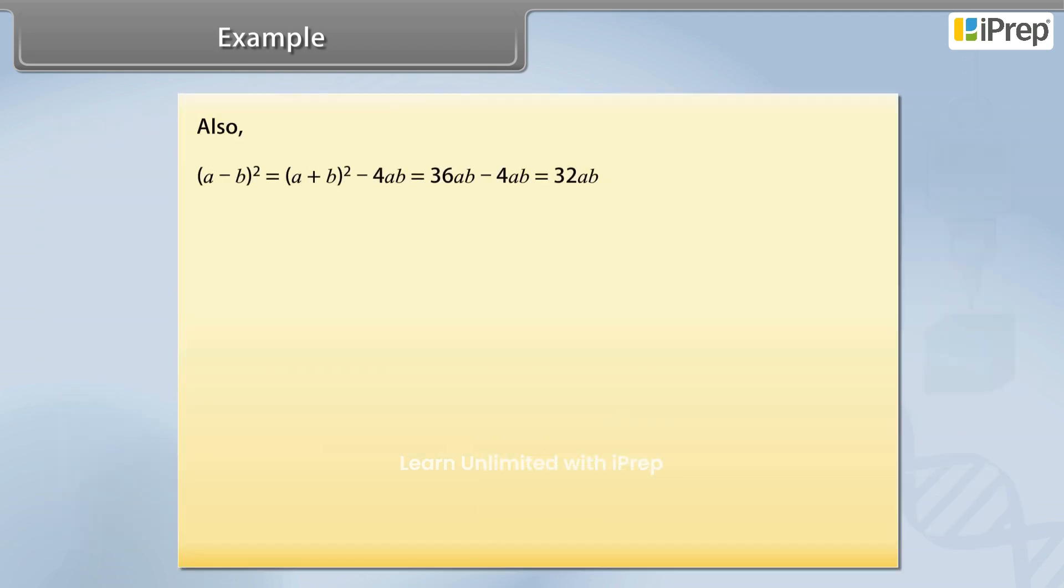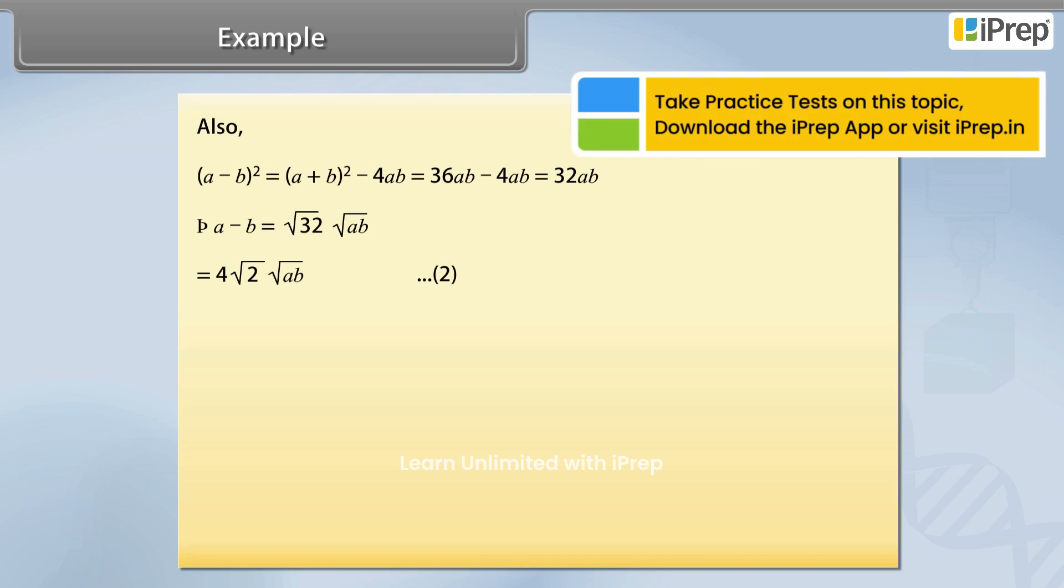Also, (a minus b) equals 4 square root 2 times square root ab. Let this be equation 2.